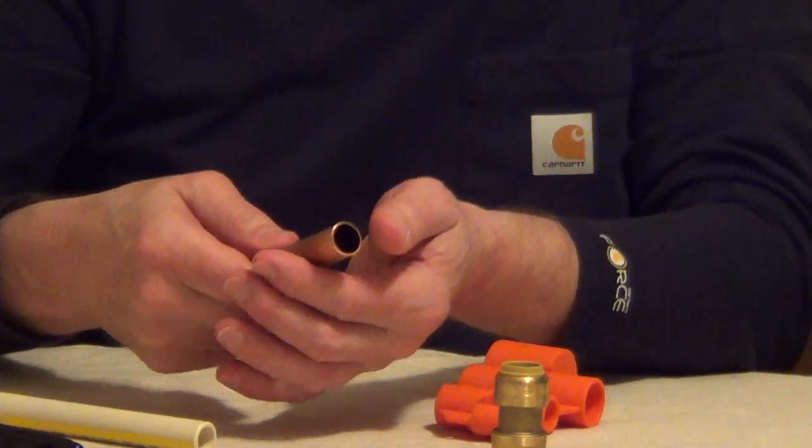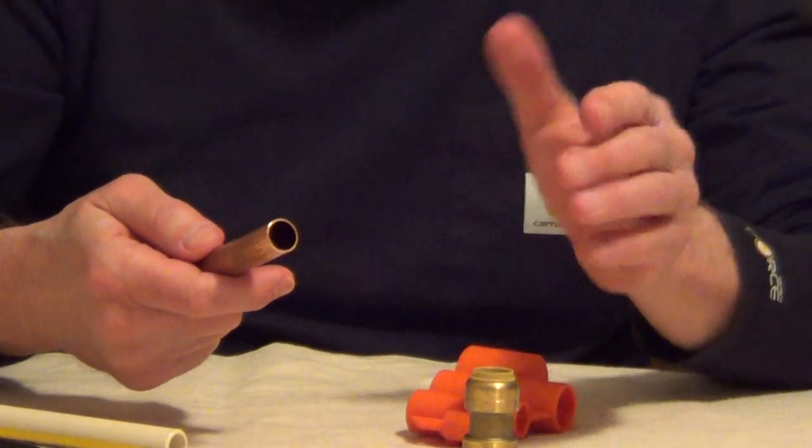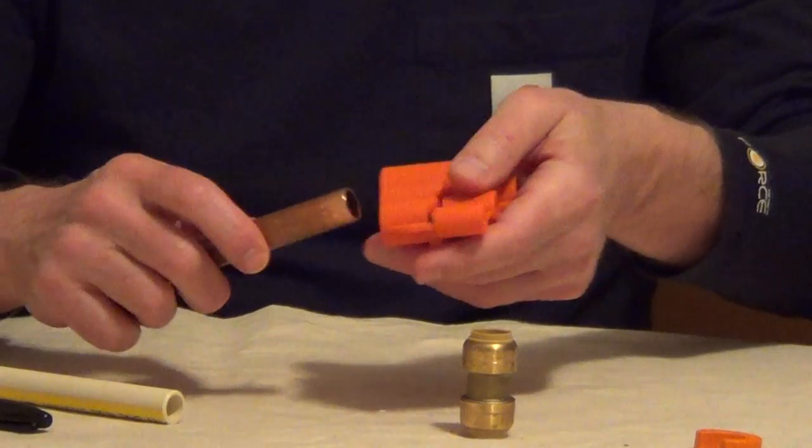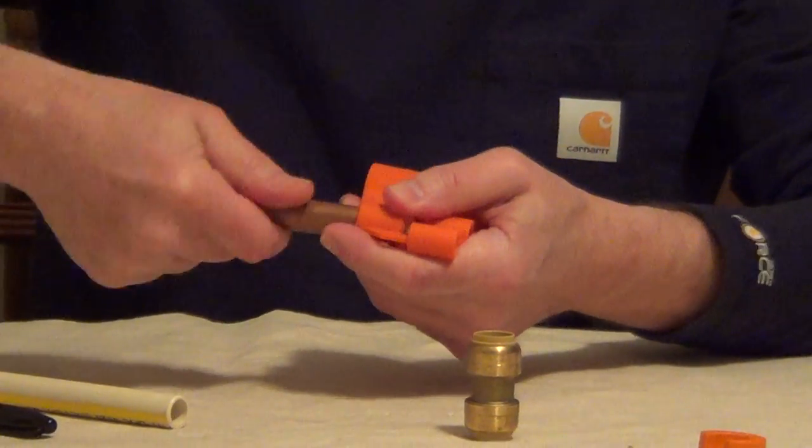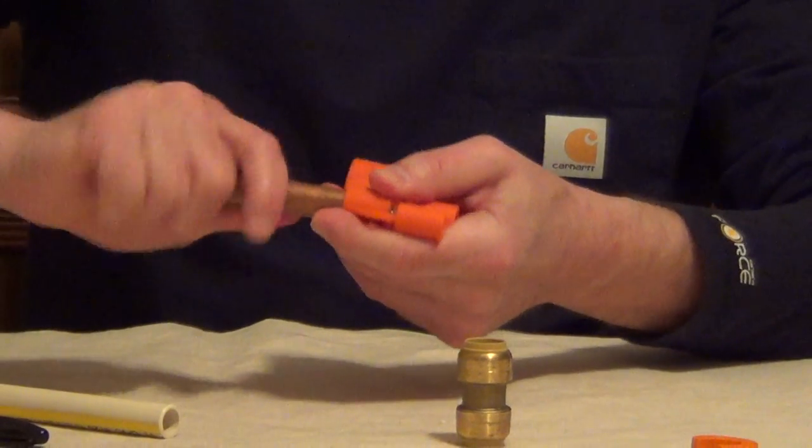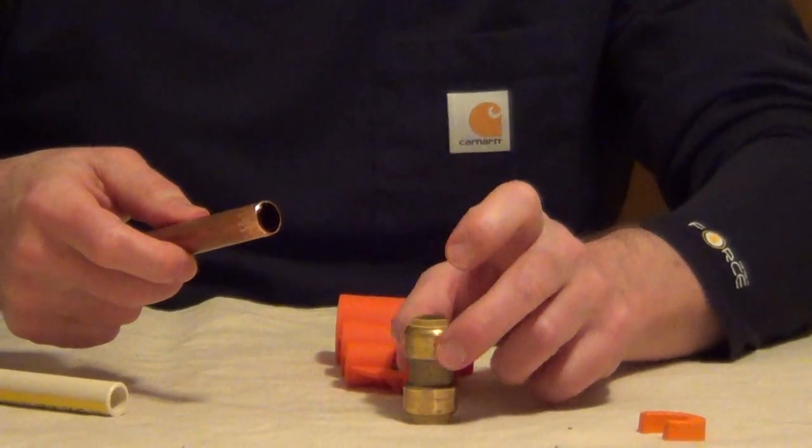One, when you cut your pipe, if you have any burrs on the outside edge, you could potentially damage the O-rings and cause a leak. So this deburring tool, and this has different sizes on this tool, you run the pipe in here and what it's going to do is smooth the outer edge so that you don't nick the O-ring.